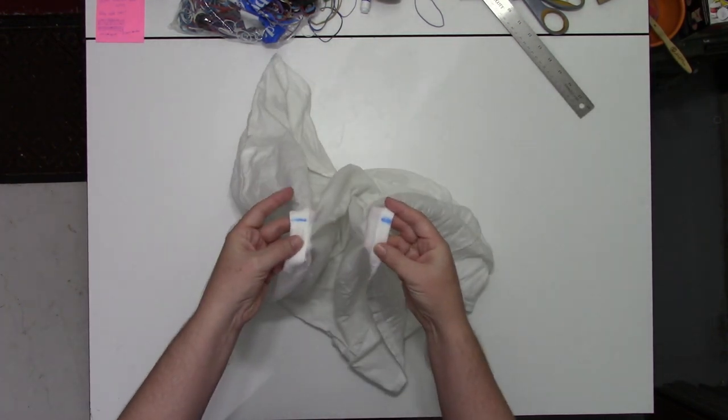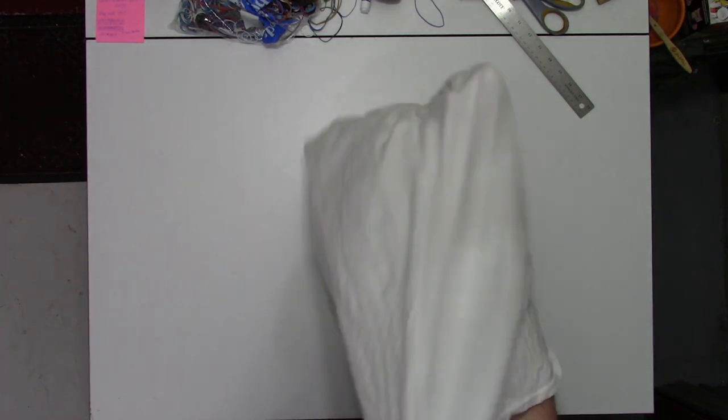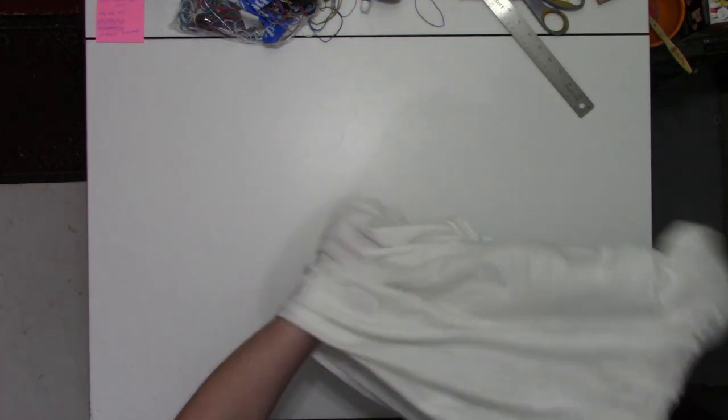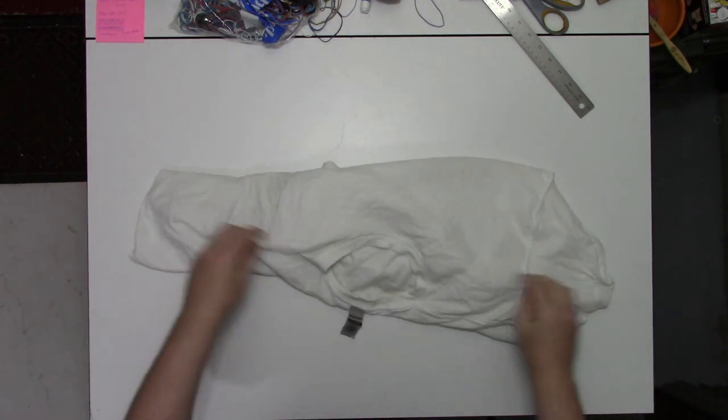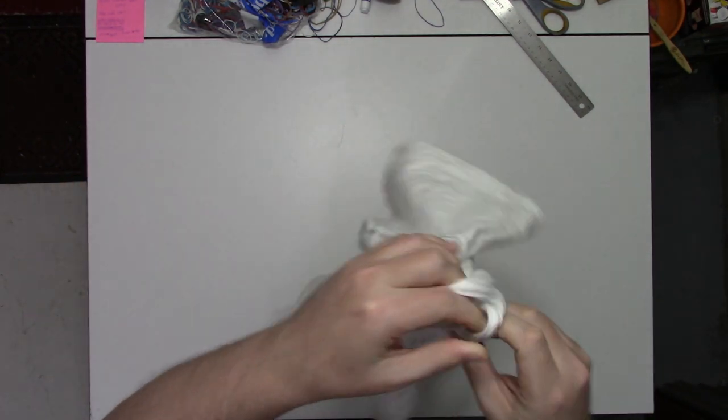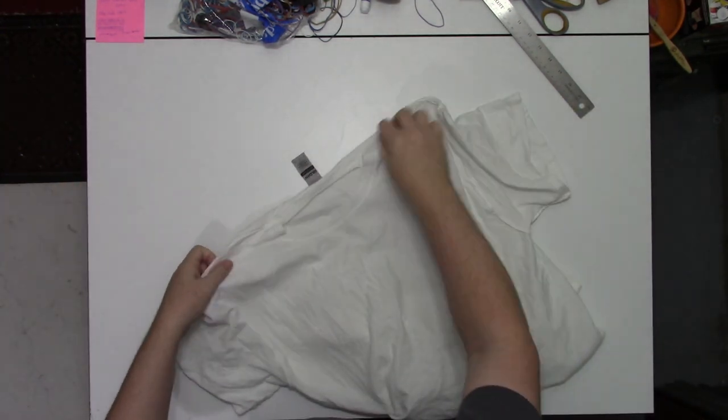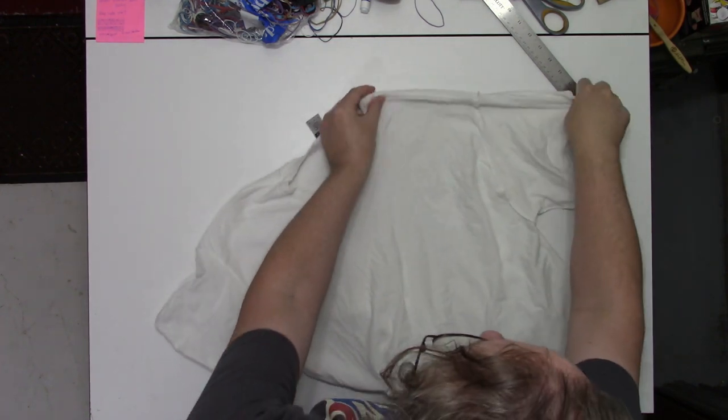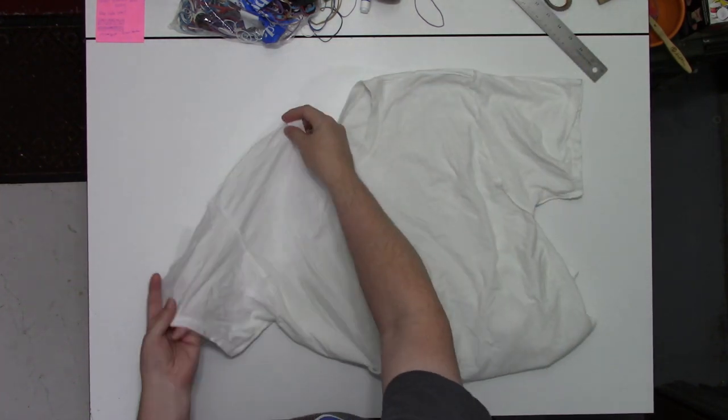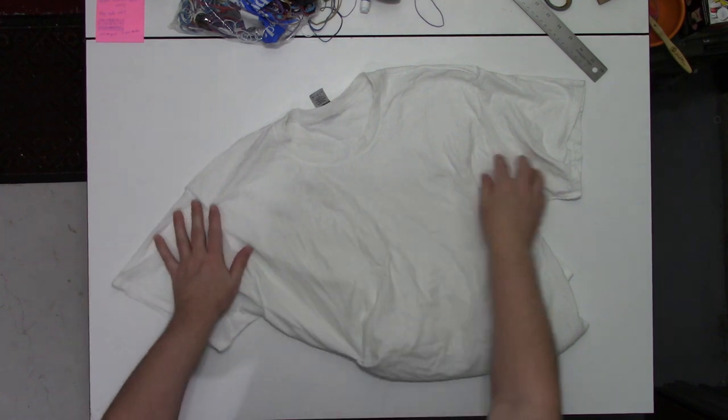So I've marked the center point, go ahead and flip it inside out, and do the fold where the sleeves are inside each other. There's a separate video that's listed in the description on how to do that, and then we'll go from there.